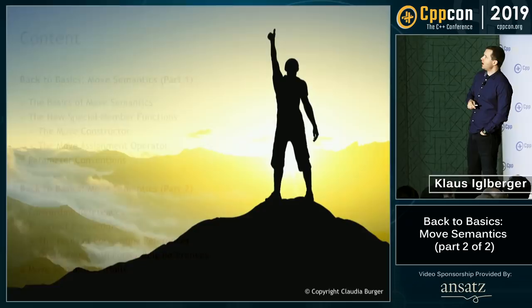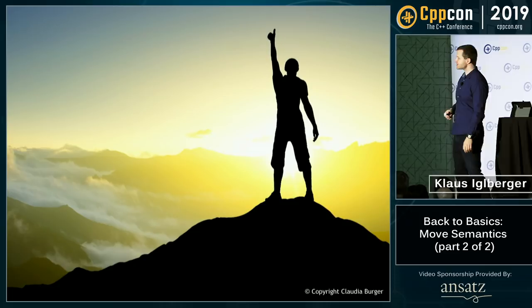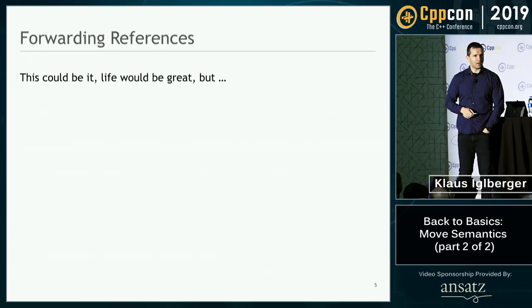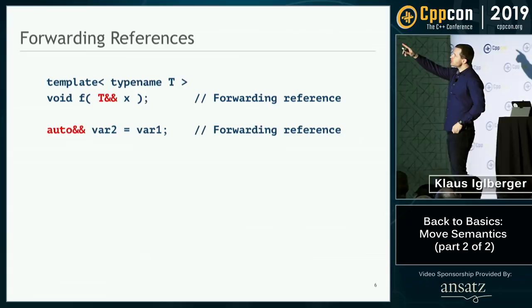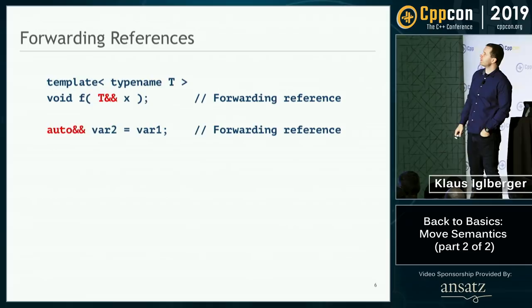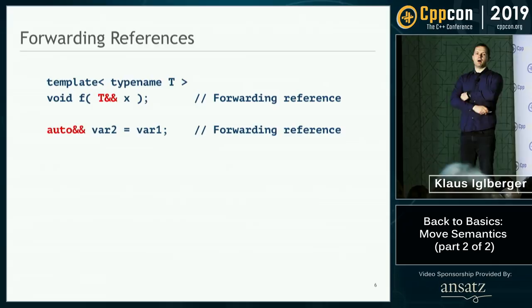This is the feeling you still have from Part 1: 'I have mastered move semantics, it's not that difficult — why are people complaining?' Well, I did not yet mention another feature. I'm now talking about forwarding references — these two: T&& and auto&&. This looks like an r-value reference to some extent, and it perhaps feels like one, but unfortunately it's not. This is a special kind of reference, and immediately that good feeling you had before is gone.